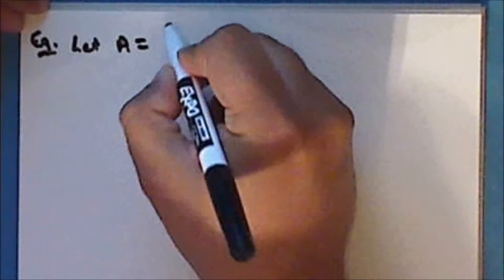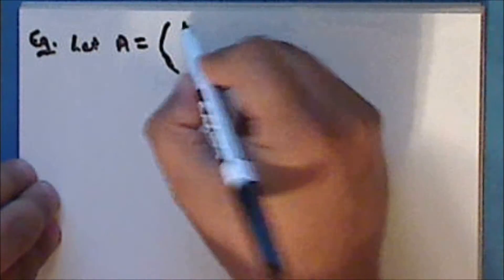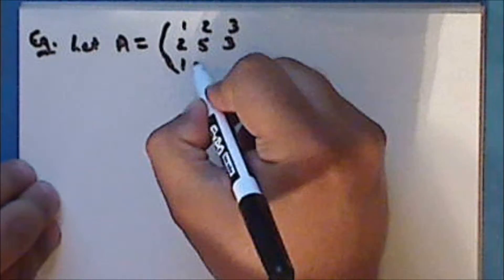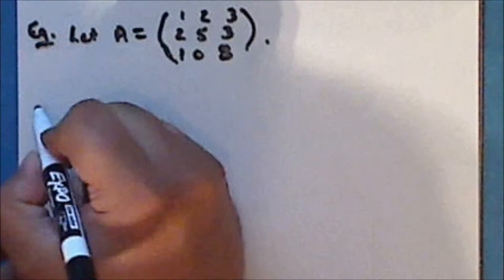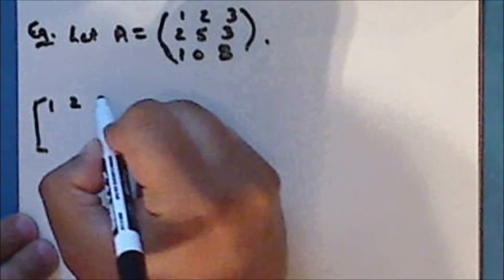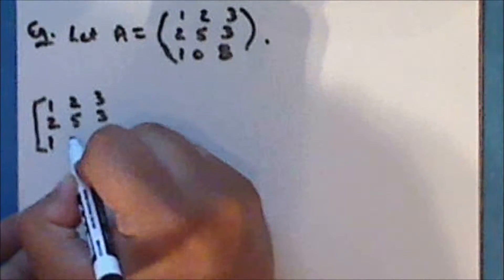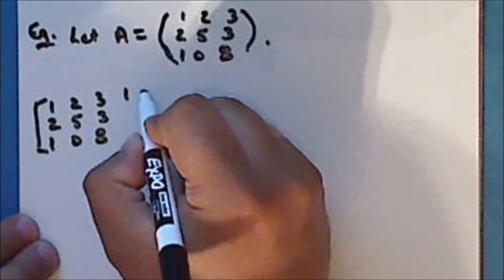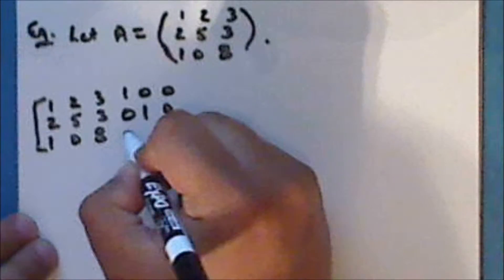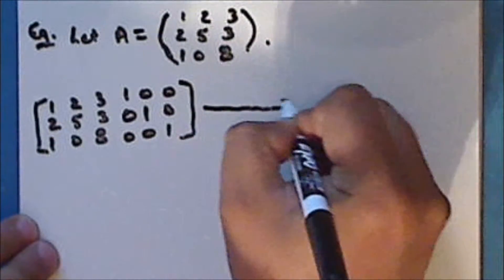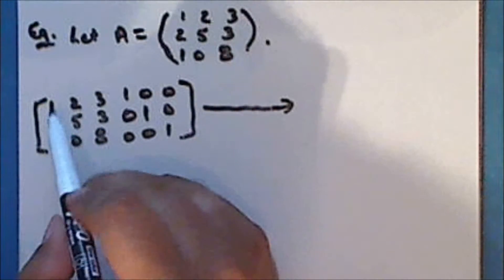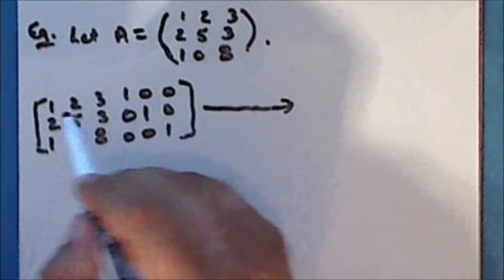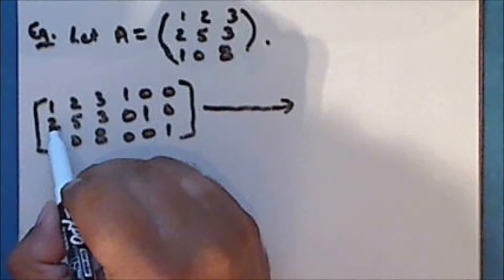In the second exercise we have the 3 by 3 matrix A with rows 1 2 3, 2 5 3, 1 0 8. We will use the inversion algorithm to find A inverse if it exists. We start with the matrix A and append to it the 3 by 3 identity matrix. In the first entry of the first row we have a leading one, and so we need to eliminate the non-zero entries in that column. First we'll add negative 2 times row 1 to row 2, and row 1 and row 3 will remain unchanged.